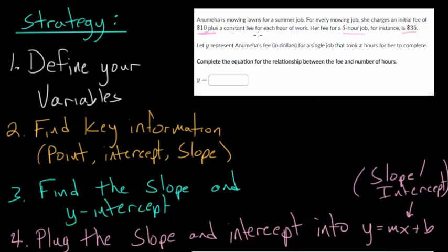So let's start with step one. We've got to define our variables, but until we get there, let's just read through it really quick. And again, I'm probably going to mispronounce these names. So let's say Anumeha is mowing lawns for a summer job. For every mowing job, she charges an initial fee of $10, so that's our y-intercept, plus a constant fee, that's our slope, for each hour of work. Her fee for a five-hour job, for instance, is $35. So that's going to be a point on our line. We can use that information and let y represent Anumeha's fee in dollars for a single job that took x hours for her to complete.